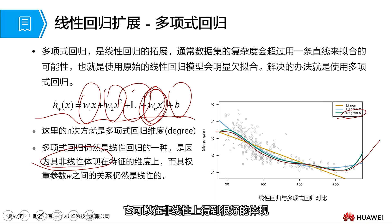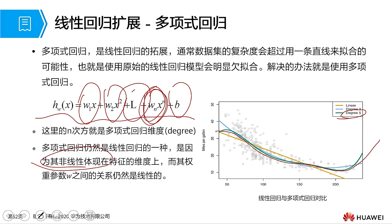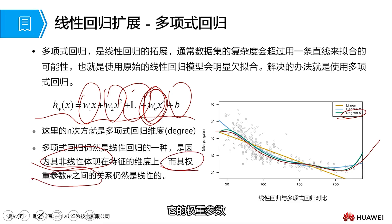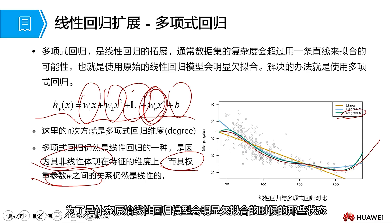Polynomial linear regression is one improvement of linear regression. However, the relationship between its weight parameters w is still linear, so it is an extension of linear regression. Its purpose is to supplement the original linear regression model in states when obvious underfitting occurs. Just use polynomial linear regression, because it has better non-linearity.